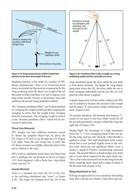Thrustline moments: PPC designs can have different moments caused by thrust. The propeller thrust may be above the CG or go through the CG. Since the cart swings free in pitch, this CG thrust moment can slightly affect the pitch of the cart in relation to the wing. PPCs with an attachment point above the thrust line have a pitching nose-up moment. The longer the distance from the CG to the wing attachment point, the more stable the cart pitches from thrust moments. The higher the wing attachment point above the CG, the more stable the cart is from swinging underneath, and the less the cart will pitch up when thrust is applied. A higher hang point will also better stabilize the PPC cart in turbulence.